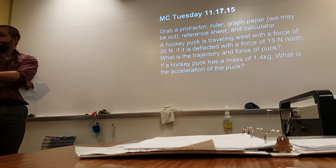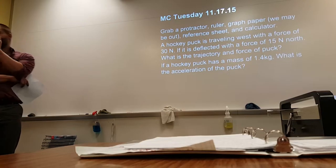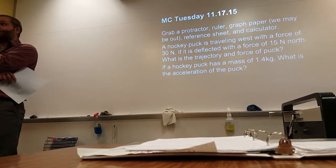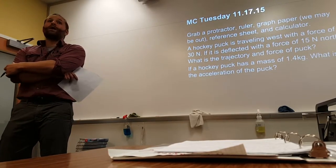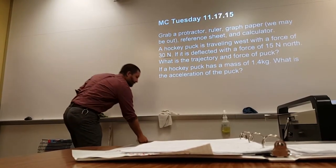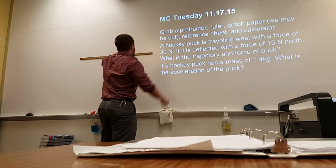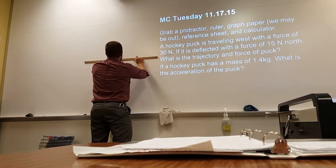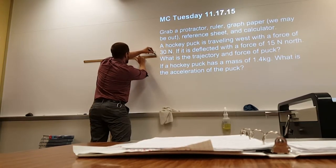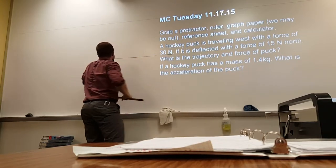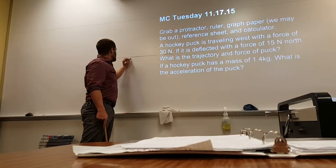Show the directions — which one do I do first? It's a larger vector; it has a larger magnitude. Always write the vector with the larger magnitude first. So I'm going to draw it going west, and you want to draw these to scale because you have a ruler. I'm going to draw it 60 centimeters. Which way does the arrow go? Left. Okay, and I like to label it — this is 30 newtons.